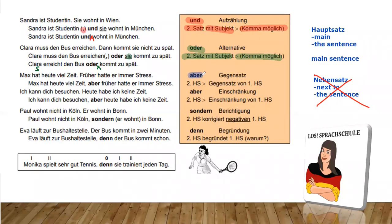Next one is aber. Aber makes it an opposite. For example: Max hat heute viel Zeit. Früher hatte er immer Stress. Max today has a lot of time; in the past he had a lot of stress — two opposite things. We can combine it: Max hat heute viel Zeit, aber früher hatte er immer Stress. Here we don't have the option of leaving out the subject — we have the subject in both sentences, and the comma is mandatory. We don't have any option to leave it out.